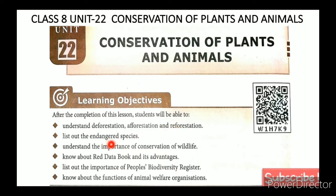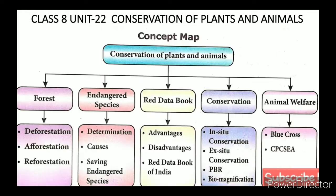We have endangered species in the second and third parts. The QR code is in the description box. In this lesson we have a total of 9 topics: 1. Deforestation, 2. Afforestation, 3. Reforestation, 4. Endangered Species, 5. Red Data Book, 6. Conservation, 7. People's Biodiversity Register, 8. Biomagnification, 9. Animal Welfare.